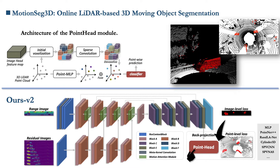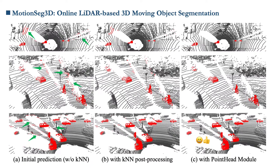We backproject or re-index the feature maps of the last layer to the original points. We then refine point-wise segmentation results by combining this with spatial information, performing a lightweight point cloud convolution operation. To trade off speed and accuracy, we use a sparse convolution structure. The point head enables end-to-end optimization and can better handle the problem of false positive predictions around object boundaries.